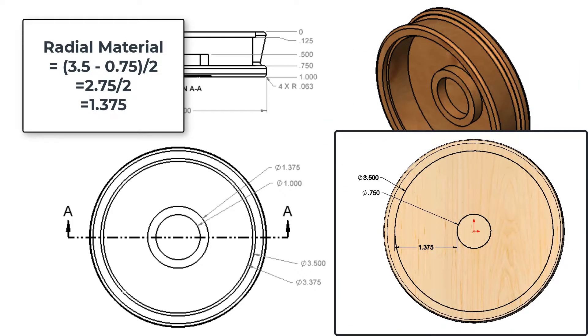Since I have pre-drilled a 3/4 inch hole and the final part diameter will be 3.5 inches, there is 1.375 inches of material to be removed on each side of the hole.